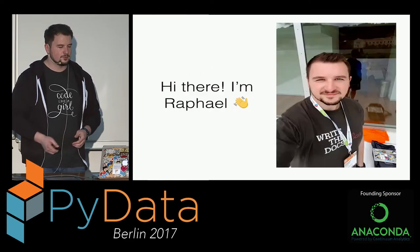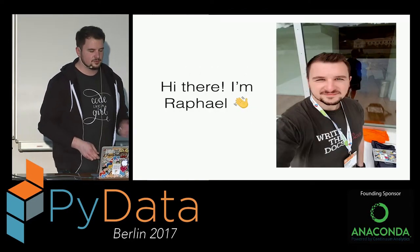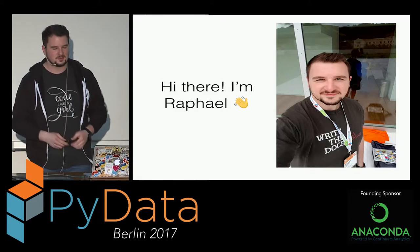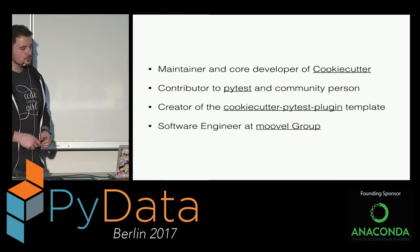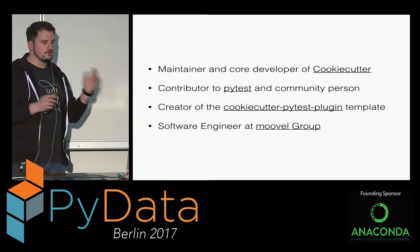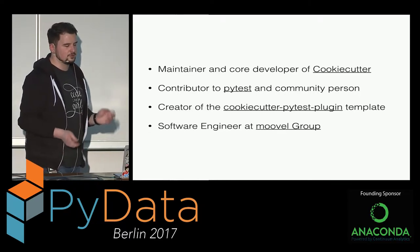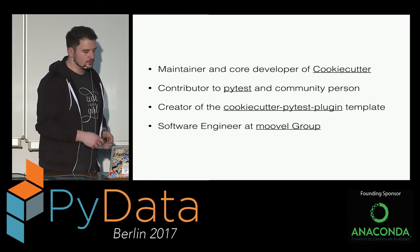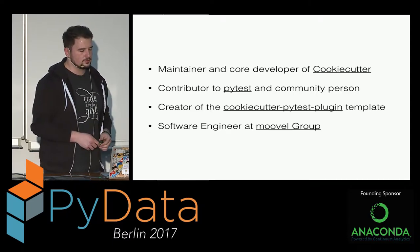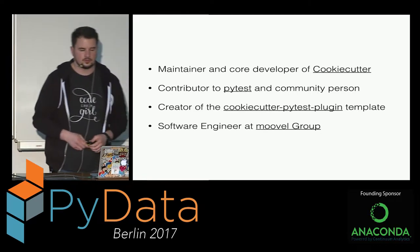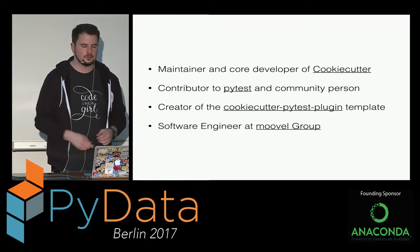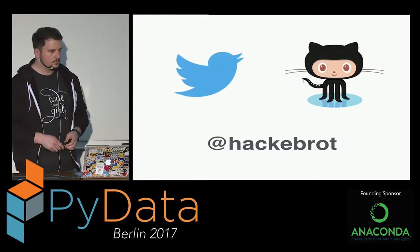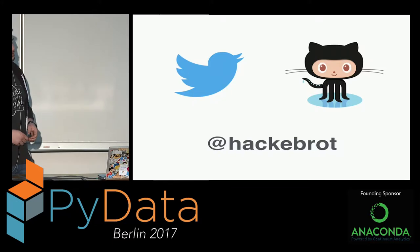Just a little bit about myself. My name is Raphael, and I'm currently based in Berlin. I have lived in Edinburgh, Scotland for the past one and a half years, but I'm German originally. I'm a maintainer and core developer of the Cookie Cutter project. I also contribute to PyTest and plugins, and sometimes act as a community person — talking on podcasts or leading development sprints at EuroPy. I'm also the creator of the Cookie Cutter PyTest plugin template. My day job is software engineer at a company called Movil, where we work in urban mobility using Python and Go. You can find me on social media — Hackabroad is my Twitter handle and GitHub username. I'll post links to my slides on Twitter later.